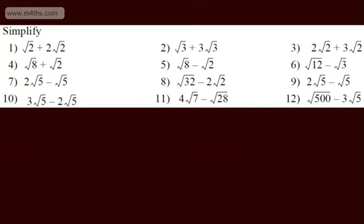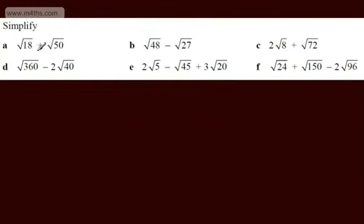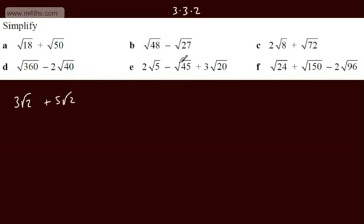Let's do a couple more. Root 18 plus root 50. We can rewrite: root 18 as 3 root 2 (since 18 = 3 × 3 × 2), and root 50 as 5 root 2 (since 50 = 5 × 5 × 2). Then we simply add those: 3 root 2 plus 5 root 2 gives 8 root 2. Check it on a calculator if you like.